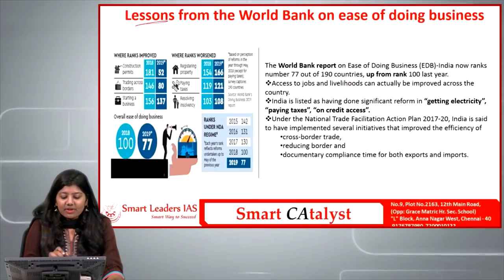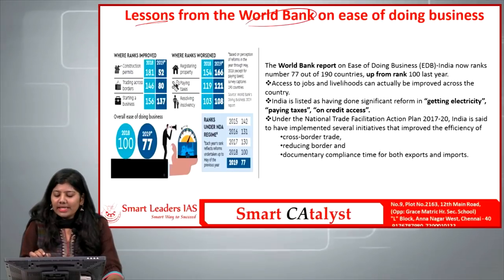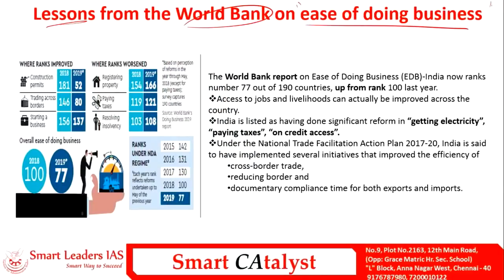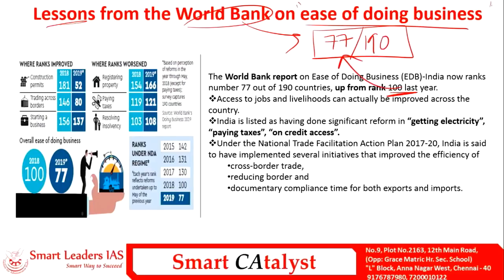The next article is lessons from the World Bank on ease of doing business. India scored 77th rank out of 190 countries, up from 100th rank last year — a major improvement. The World Bank uses 10 parameters to calculate this ease of doing business ranking, and this article discusses how the calculation is done, what the report misses out, and how it could be made more efficient.